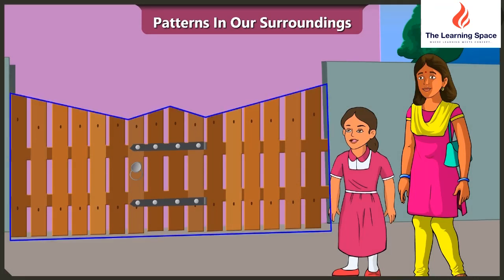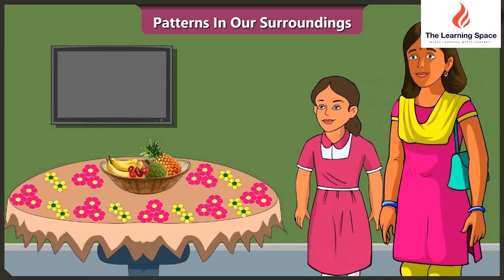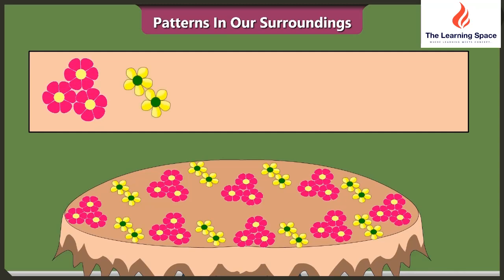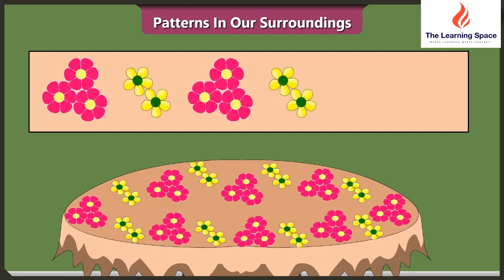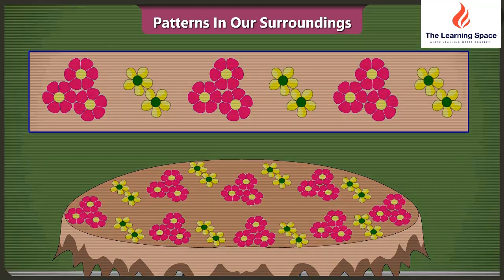Hey, the door of our house also has a pattern. Rightly said, Vinny — the strips here have a pattern of big to small, small to big; initially big to small and then small to big strips have been used. Mummy, our tablecloth also has a pattern. It has three flowers, then two flowers, then again three flowers, two flowers, three flowers, two flowers — it gets repeated and that's how this pattern is created.